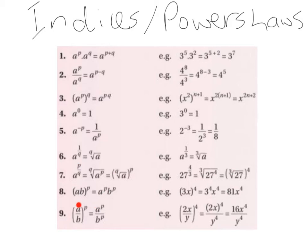Law 9: A over B raised to the power of P can be broken down to A to the power of P divided by B to the power of P. An example: 2x over y raised to the power of 4 gives us 2x to the power of 4 divided by y to the power of 4. 2 to the power of 4 gives us 16, x to the power of 4 stays as x to the power of 4, and y to the power of 4 stays as y to the power of 4.